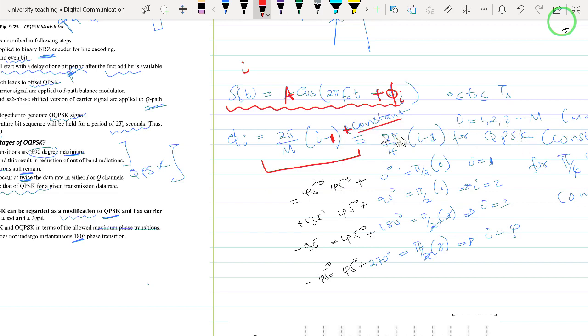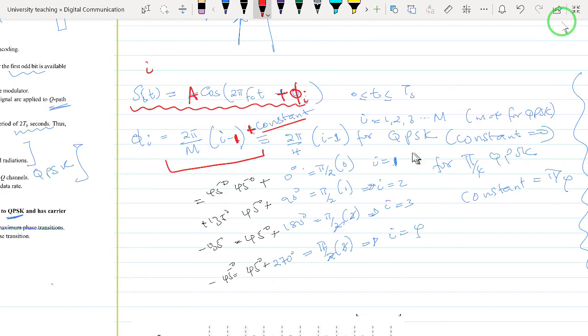With QPSK, this constant is 0. If you evaluate each symbol, when i equals 1, which would be the first symbol, m becomes 4, and i is 1, so 1 minus 1 becomes 0. Therefore, for QPSK this becomes 0, because π/2 times 0 is 0.